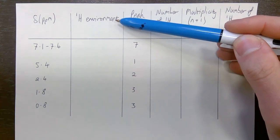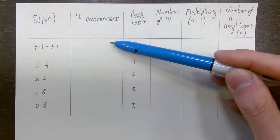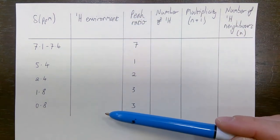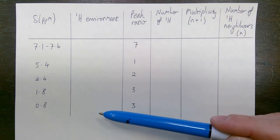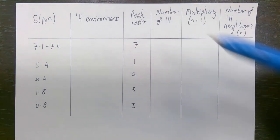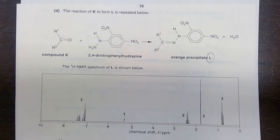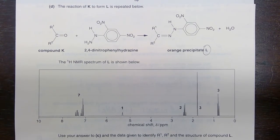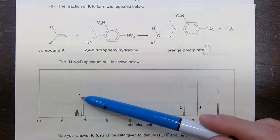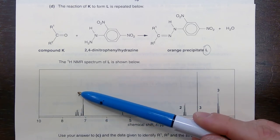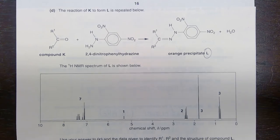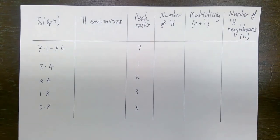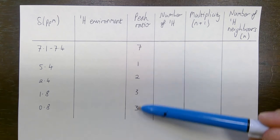In the next column — the H1 environment — this is where I write down the type of environment those H1s are present in. Let's look at the peak ratio column. In H1 NMR, the peak heights, or more correctly the integration of the peaks, is significant. You can see that in this situation they've told you what the integration is above each of the groups of peaks: 7, 1, 2, 3, and 3. I've put that into my table.